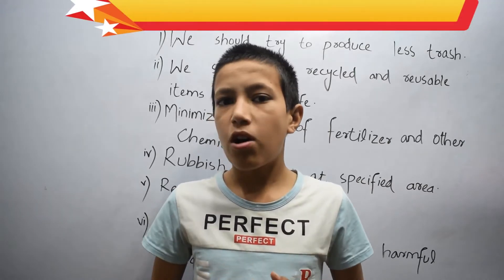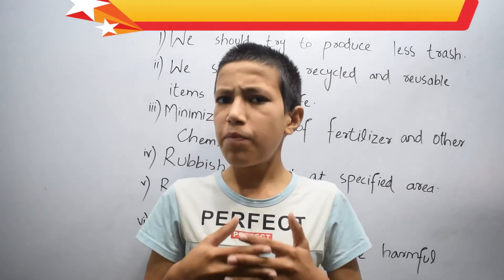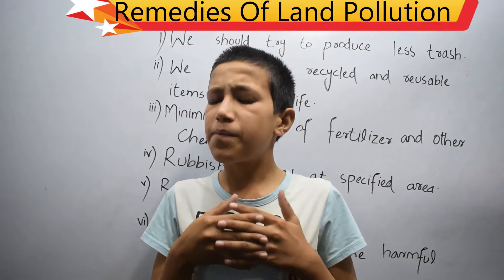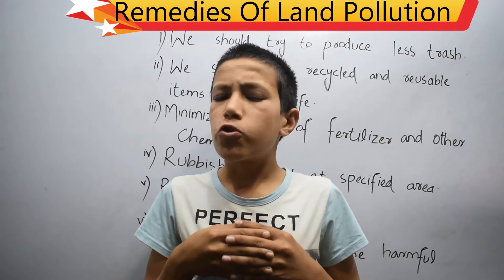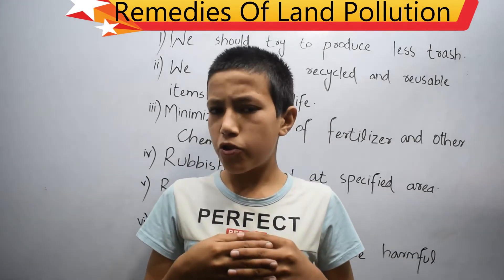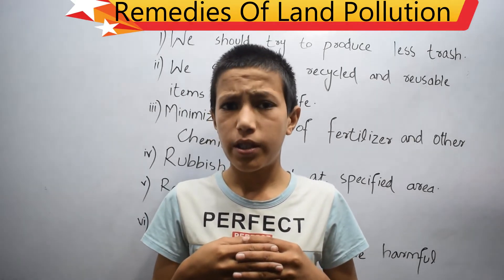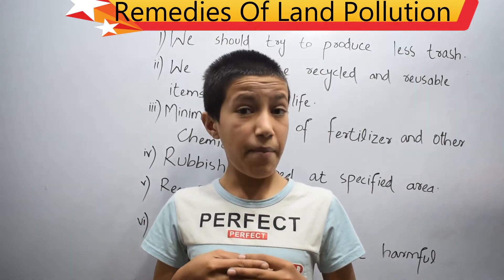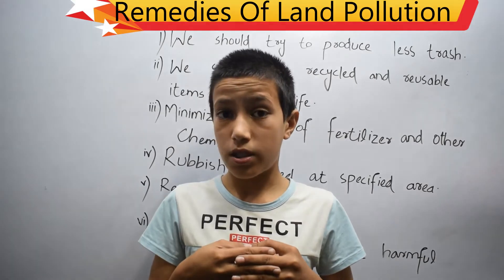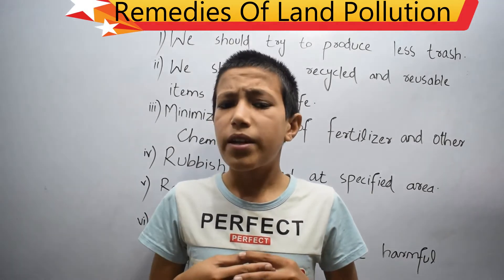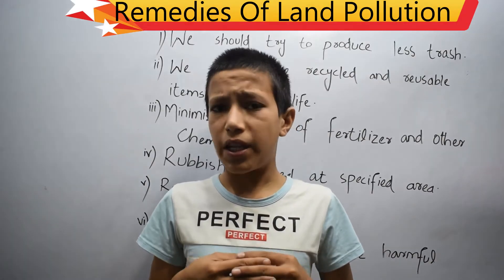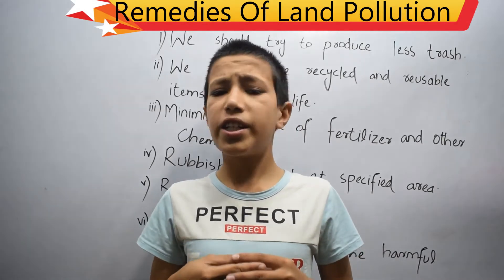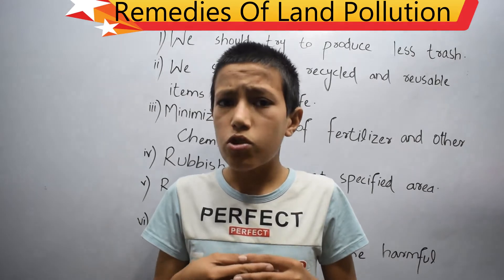Let's talk about remedies of land pollution. Land pollution is the pollution of earth due to solid and liquid waste produced by human activities. It often occurs as a result of human activities and mass use of land resources. Mass use means improper use of something. The huge amount of garbage generated in cities is another source of pollution.